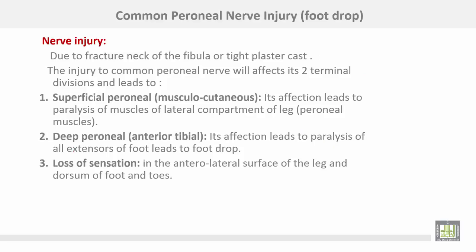Common peroneal nerve injury causes foot drop. Nerve injury occurs due to fracture of the neck of the fibula or a tight plaster cast. Injury to the common peroneal nerve affects its two terminals: affection of the superficial peroneal (musculocutaneous) nerve leads to paralysis of the muscles of the lateral compartment; deep peroneal nerve affection leads to paralysis of all extensors of the foot, causing foot drop. There is also loss of sensation over the anterolateral surface of the leg and dorsum of the foot and toes.